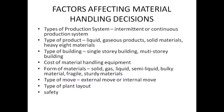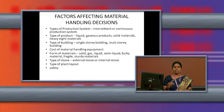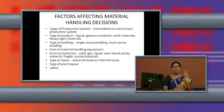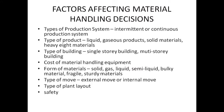Next we are going to see the factors affecting the material handling decision. The first factor is the type of production system. There are two types: intermittent production system and continuous production system. Intermittent production system means the production process is carried out in different places and lastly assembled into one single process.